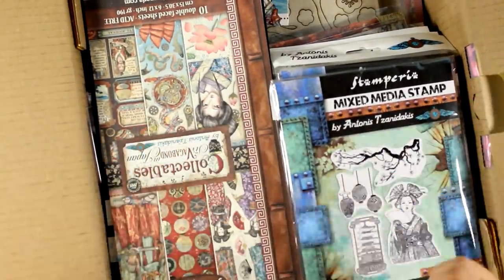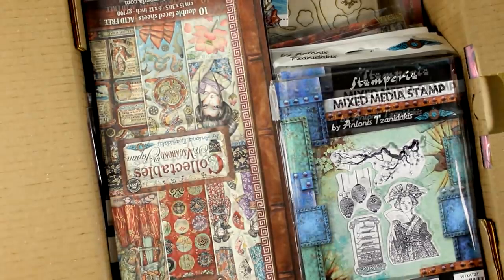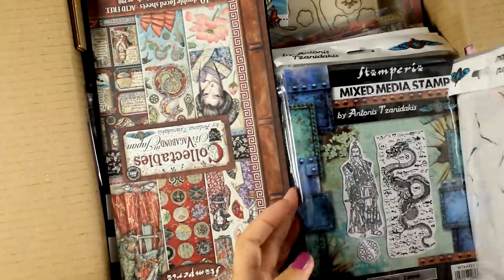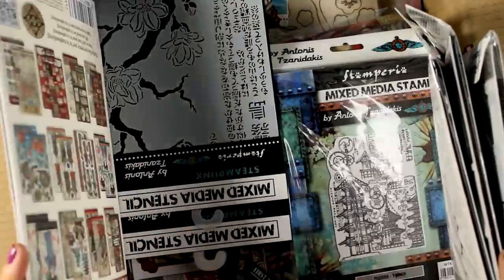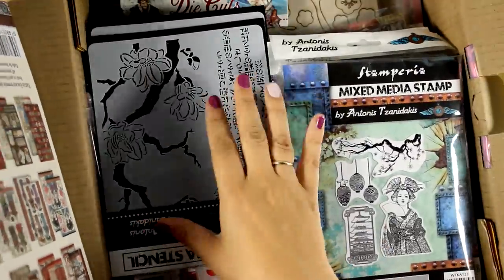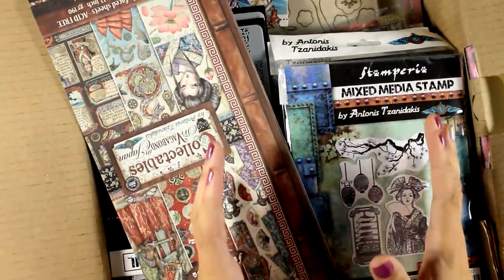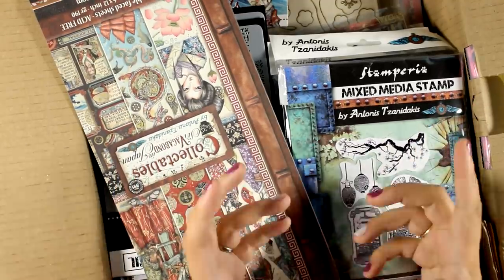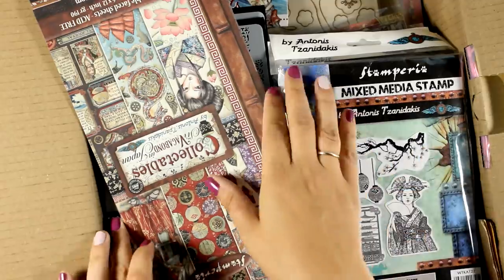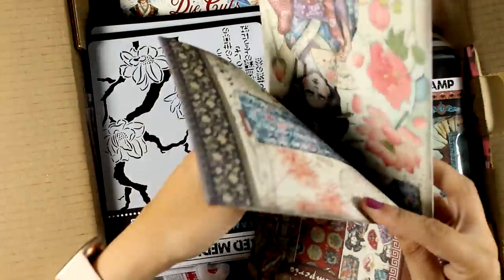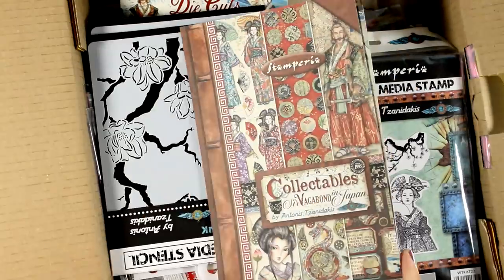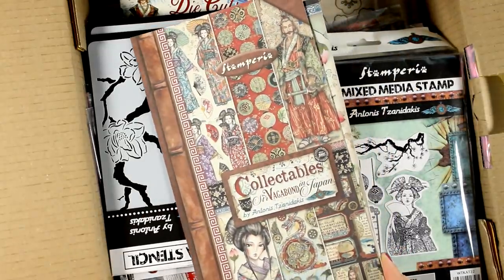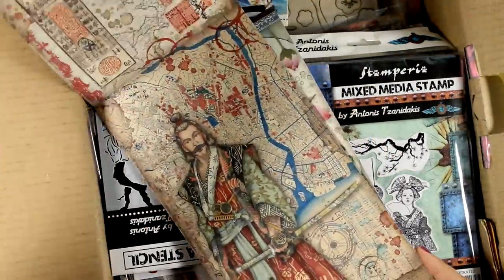Today I'm going to work with new products from Stamperia. These are designed by my talented friend Antonis Janidakis. It is a collection that has to do with Ser Vagabond from the previous collection but this time he's traveling to Japan. It's an amazing collection beautiful colors and designs lovely stamps, stencils different sizes of patterned papers you will find everything in this collection even molds, chipboards and stuff.